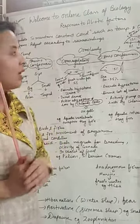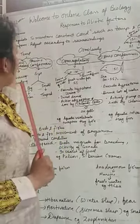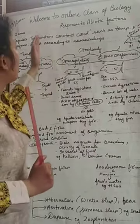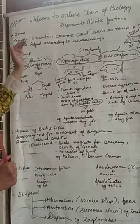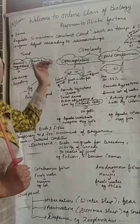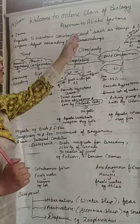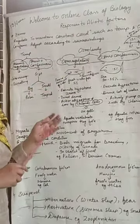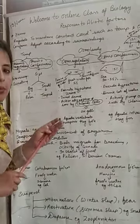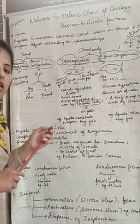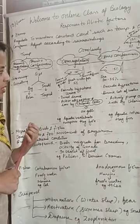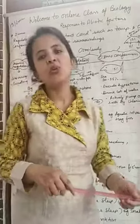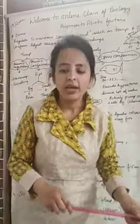In summary, we have studied that there are four types of responses of biotic factors toward abiotic factors: first is regulation, second is conformance, third is migration, and fourth is suspension. I hope everything is clear. Thank you and have a nice day.